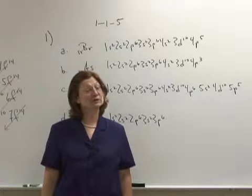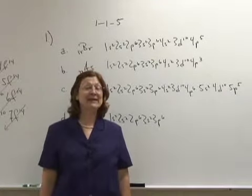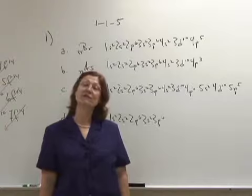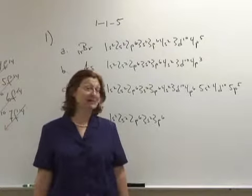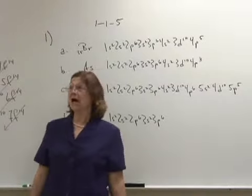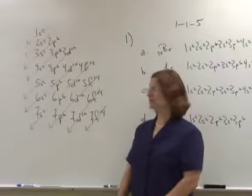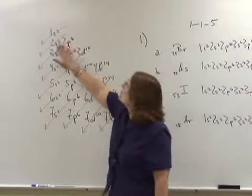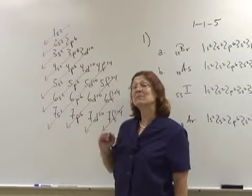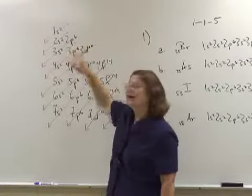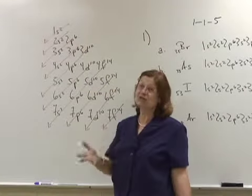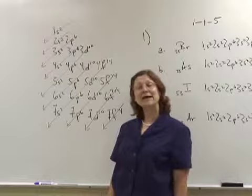In number one, we are determining the complete electron configurations of a variety of different elements. I always need to write my diagonal rule because I can't remember the order that they go in. So I write the first energy level only has an s orbital with a maximum of two electrons. The second energy level has the s and the p and there are three p orbitals, each having two electrons, giving me a maximum of six.